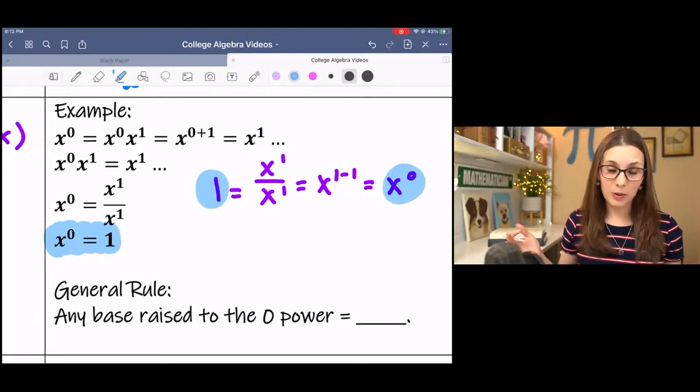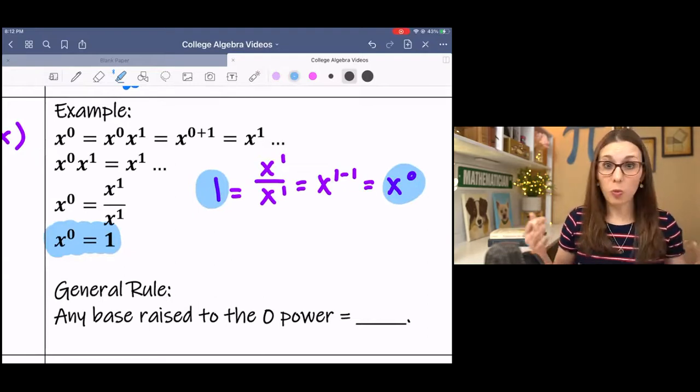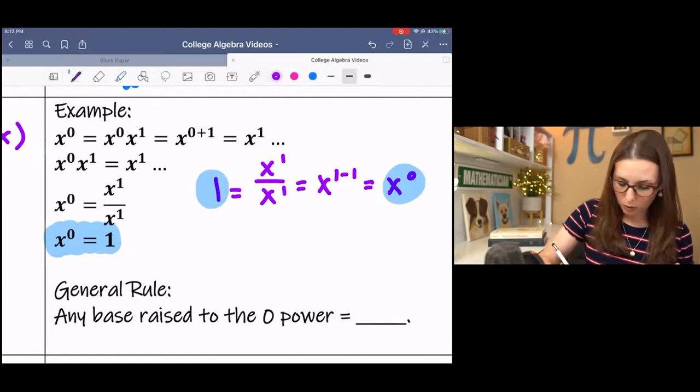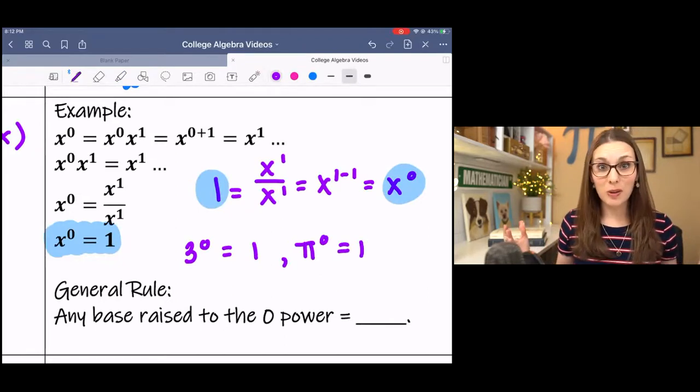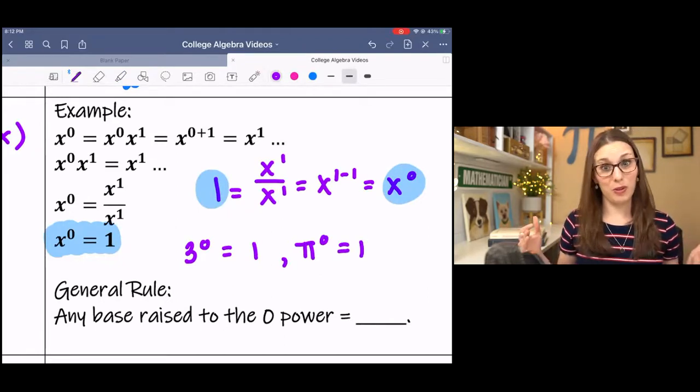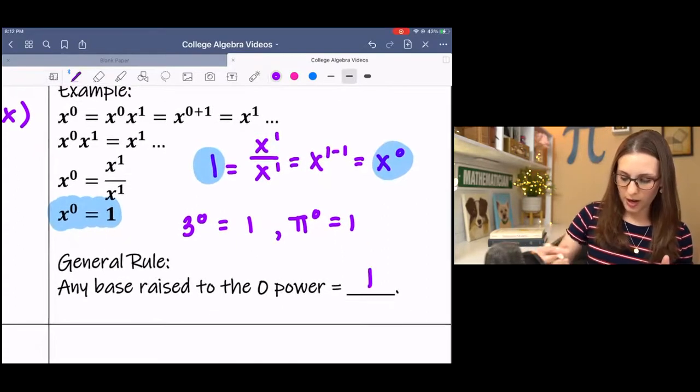And not coincidentally, but mathematically, anything to the 0 power is 1. If you do 3 to the 0 power, that's 1. If you do pi to the 0 power, that's 1. Anything to the 0 power is 1. So that's pretty cool. I always think that's fun, which we're going to use in the next example.